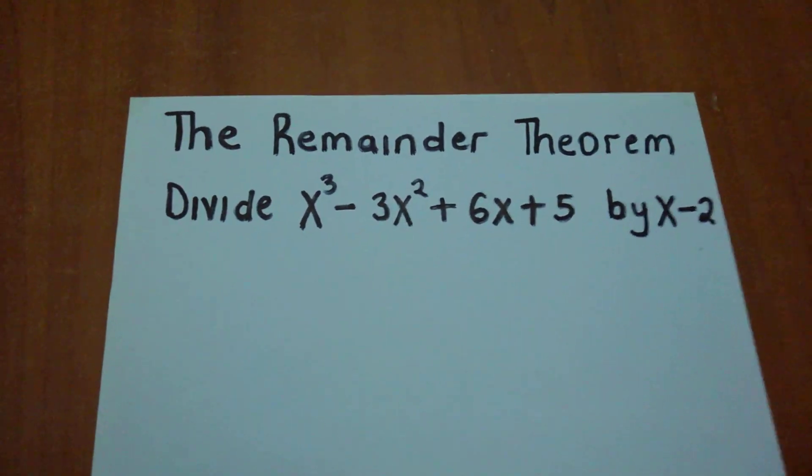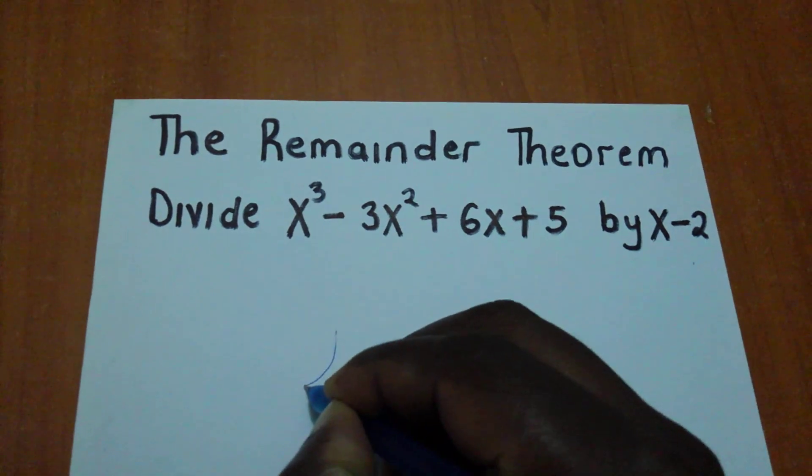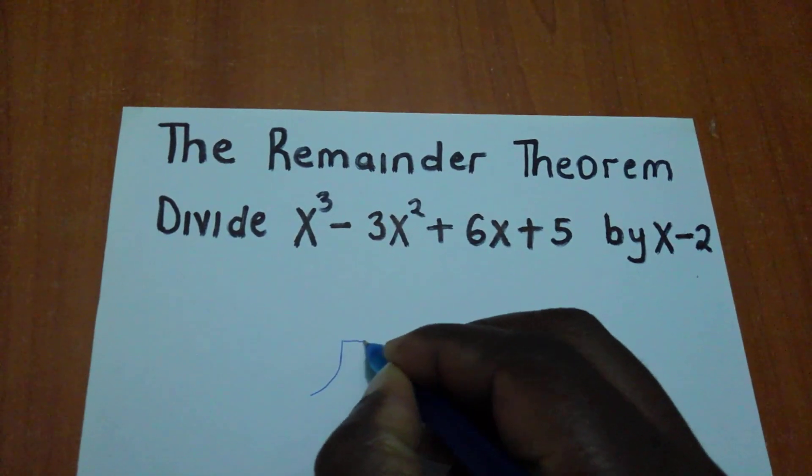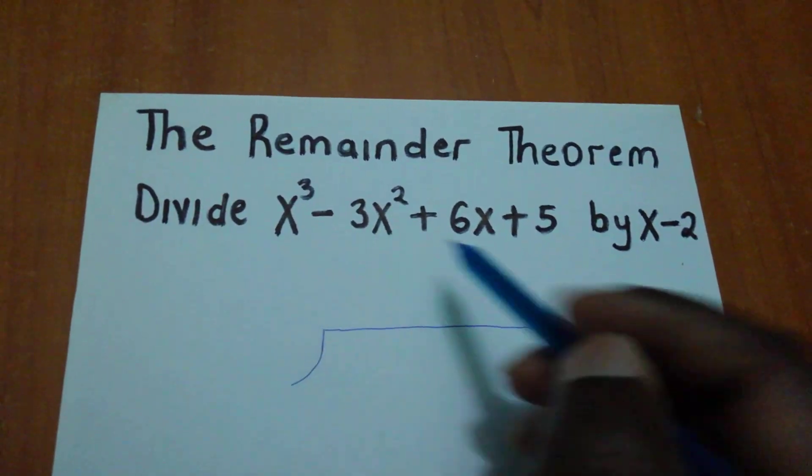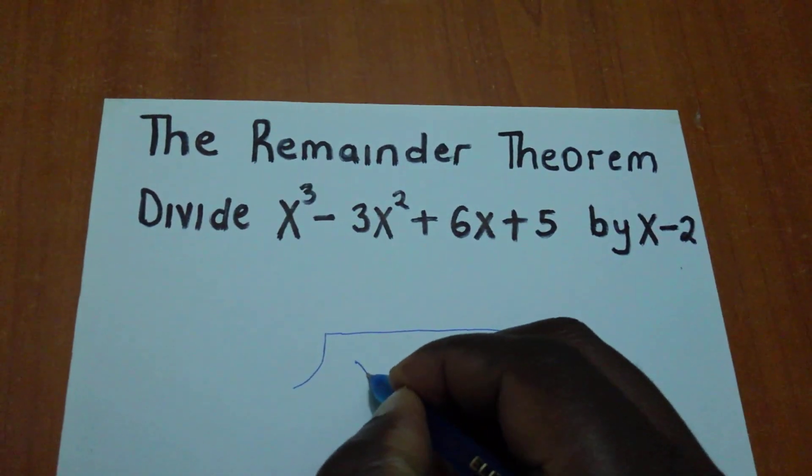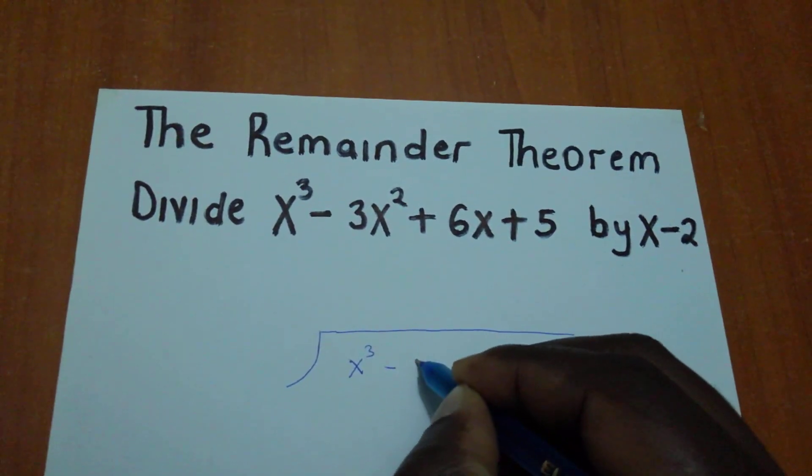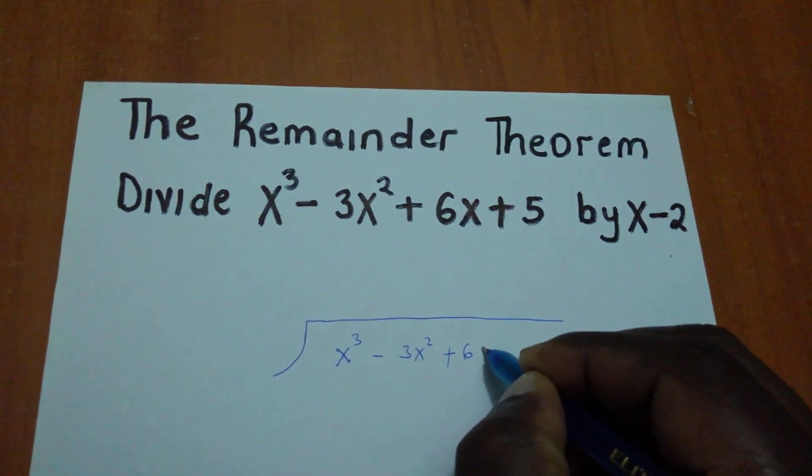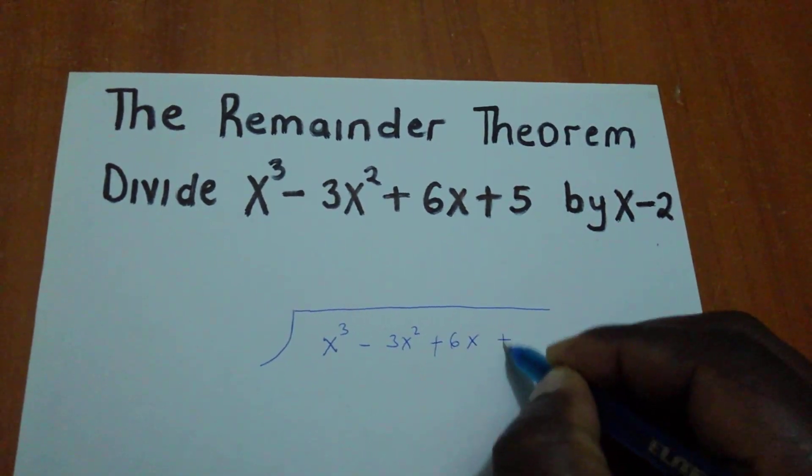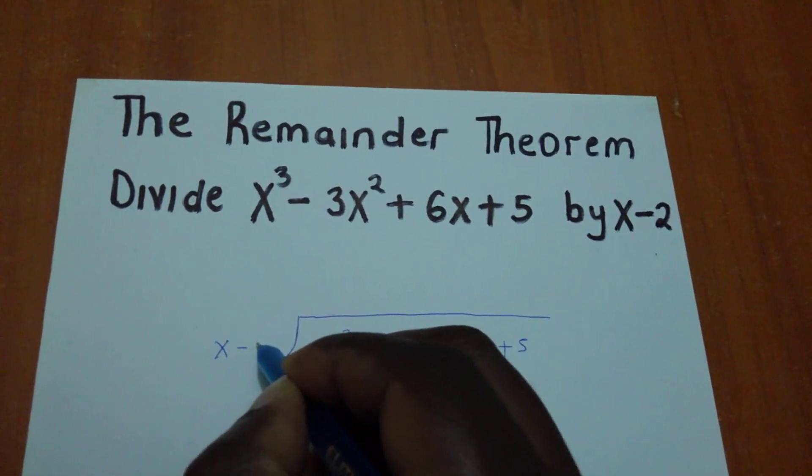In the Remainder Theorem, what we're going to do is set up the division. We have our polynomial x³ - 3x² + 6x + 5, and we're going to divide it by x - 2.